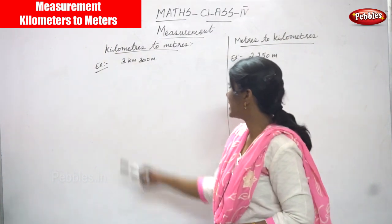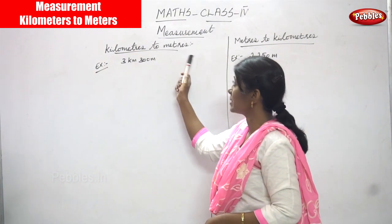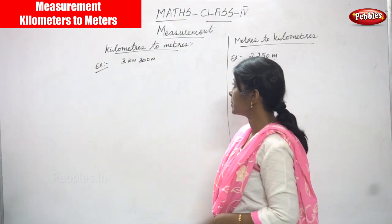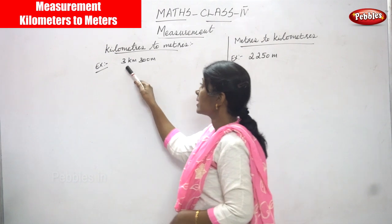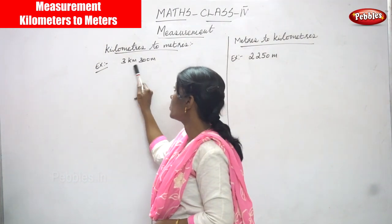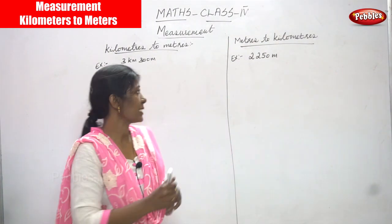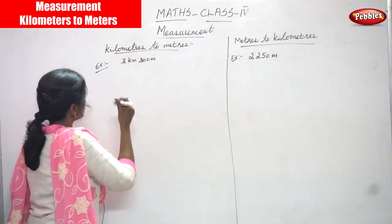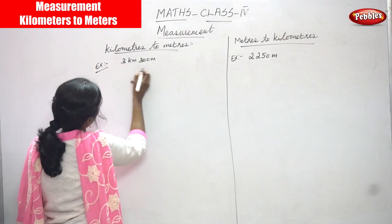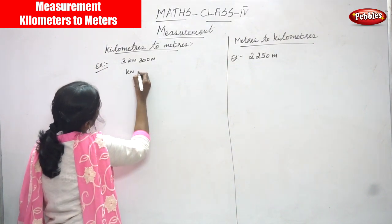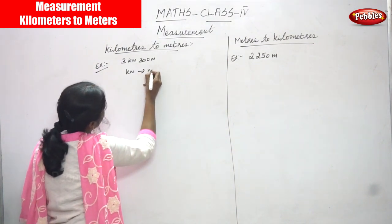Now we are going to see kilometers to meters. It is also converting kilometers to meters. So example: 3 kilometers and 300 meters. Let's start this up. It is kilometer to meter.